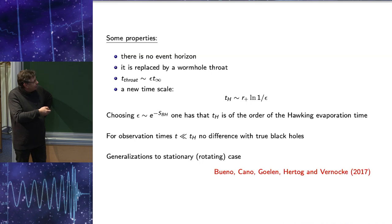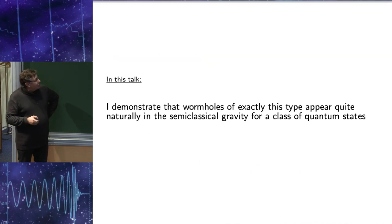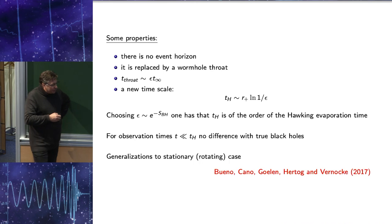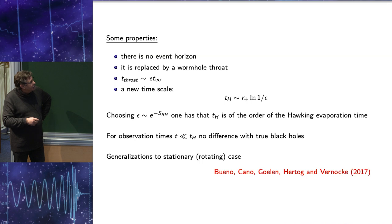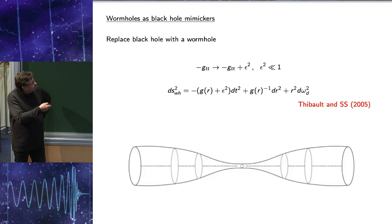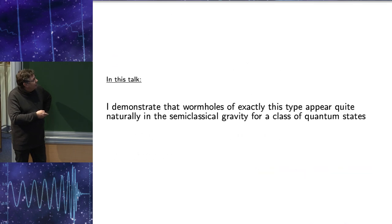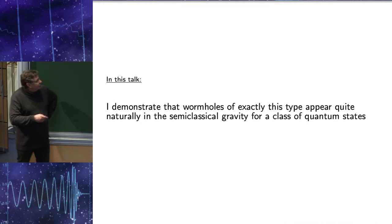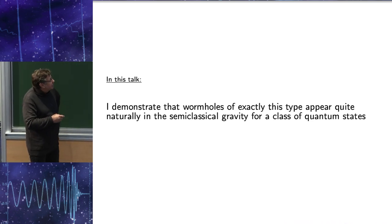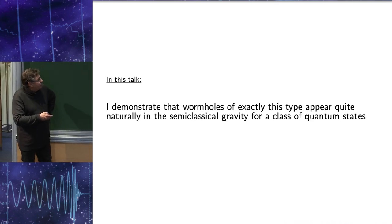And looking at this object for time much smaller than this new scale, we would not see any difference from the true black hole. And that would be a perfect mimicker for black hole. We can see the static case, non-rotating. Rotating case was considered by these people. So in this talk, I will try to demonstrate that wormholes of this type appear quite naturally in semi-classical gravity for a large class of quantum states.